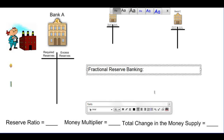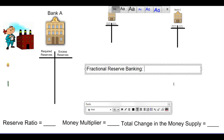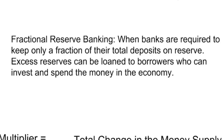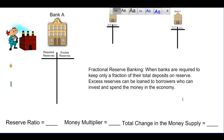Today's video lecture is going to explain how money is created in a fractional reserve banking system. A fractional reserve banking system is when banks are required to keep only a fraction of their total deposits on reserve. Any excess reserves — deposits that exceed what is required — can be loaned out to borrowers who can invest and spend the money in the economy. In such a system, a particular amount of money can be multiplied through the creation of new money as it is loaned to borrowers and spent on goods, services, or new investments in capital.